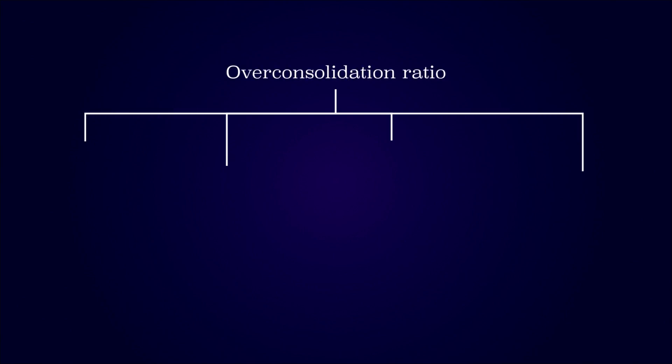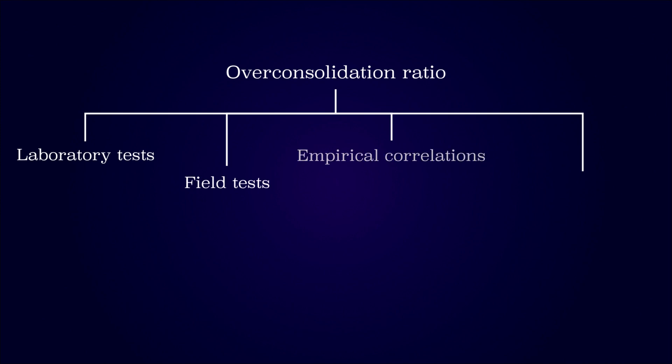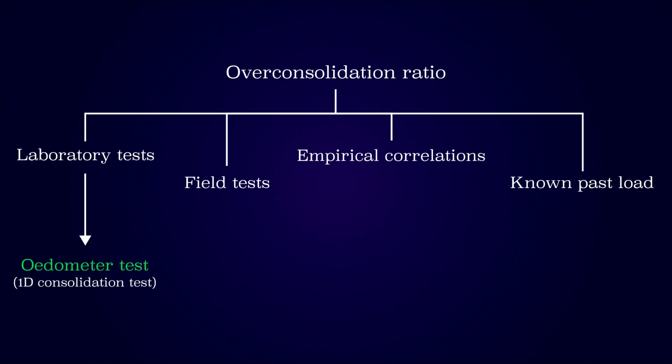There are several methods for determining the overconsolidation ratio, such as laboratory tests, field tests, empirical correlations, or simply knowing the past load. The most common laboratory test is the odometer test, which involves applying loads to a soil sample and measuring its deformations. The odometer test is a one-dimensional consolidation test where lateral movement is restricted.